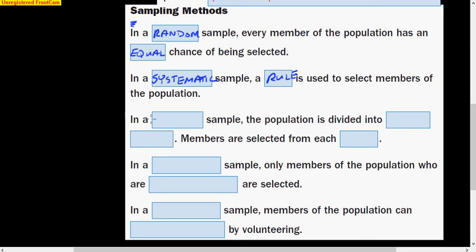In a stratified sample, the population is divided into distinct groups. Members are selected from each group. So you're going to take that sample, and then you're going to divide that sample into certain groups according to some rule.